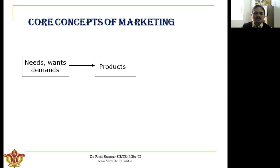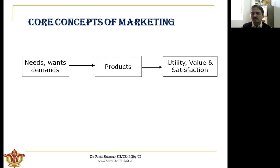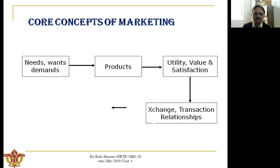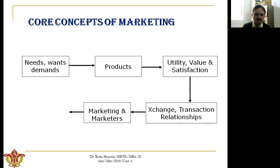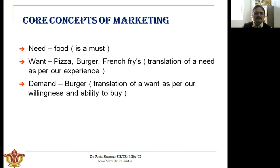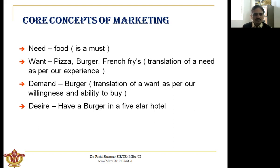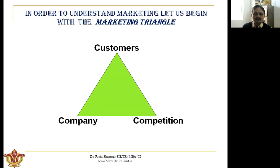This can be seen by a figure also. There is need, want, demand, product — product converted to utility, value and satisfaction. Satisfaction and utilities lead to exchange, which happens in marketing with the help of marketers in a particular market. For example, the need is food, the want can be pizza or burger, the demand can be a burger because a person only has money to buy the burger, and the desire may be to have the burger in a five-star restaurant.